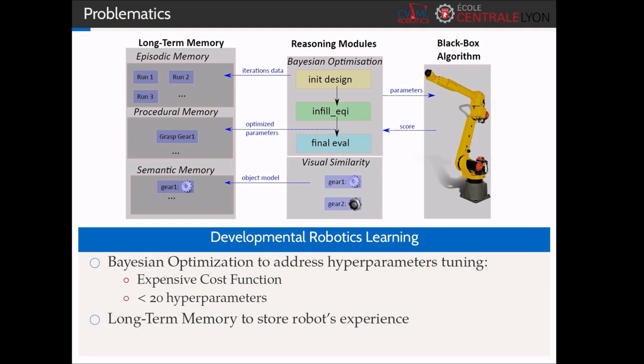We propose to enhance the performance of Bayesian optimization by adding a long-term autobiographical memory to the robot, allowing it to store data during its lifetime. It is composed of an episodic memory gathering data from experiments, a procedural memory to save optimized skill sets, and a semantic memory with knowledge about the shape of known objects. Instead of launching the Bayesian optimization from scratch, like an amnesic robot, this memory will allow the system to avoid unpromising areas in the search space, by reducing the parameter boundaries for a new task using its experience on a similar task previously learned.